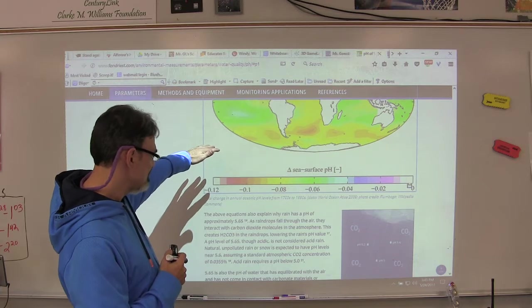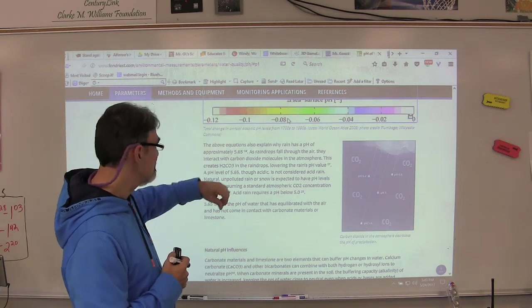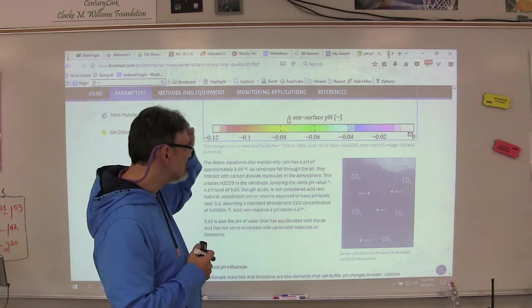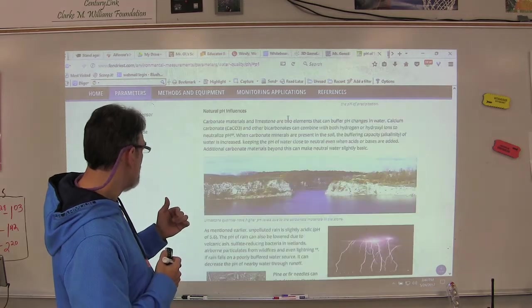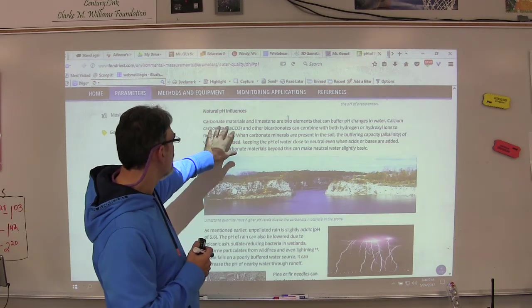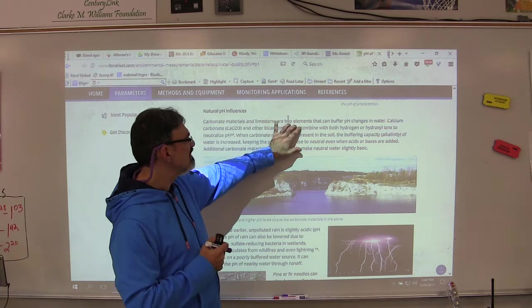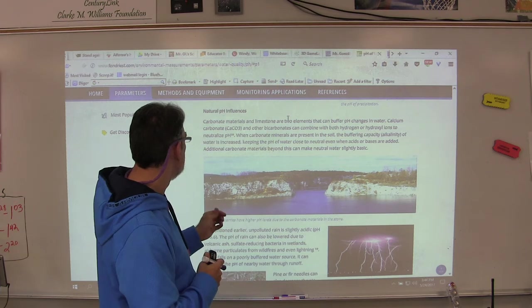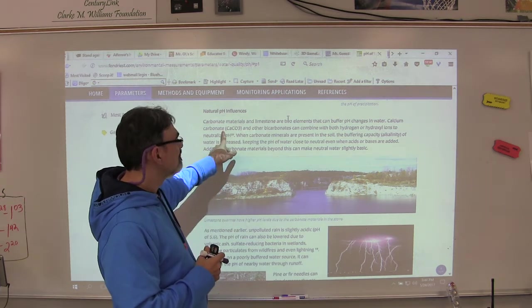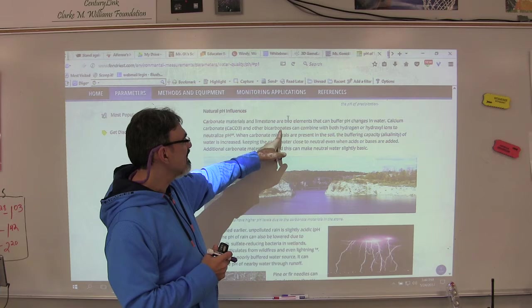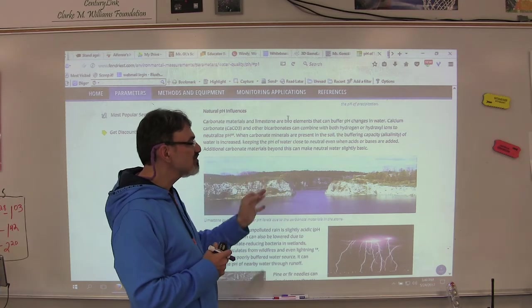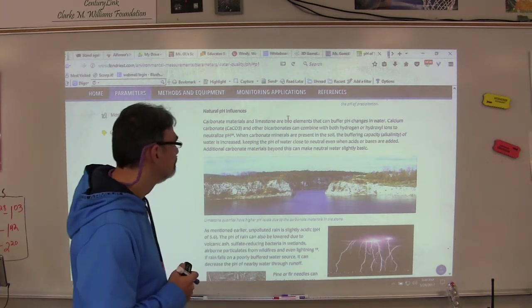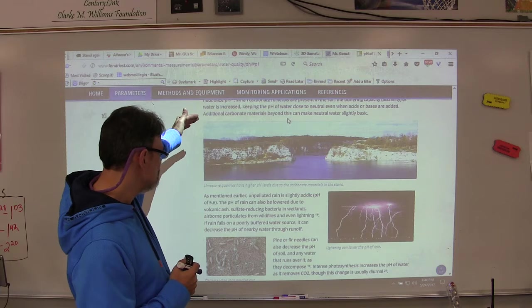This has a nice picture for you so you can see the rising acidity. This is total changes in annual oceanic pH from 1700 to the 1990s. Carbonate materials and limestone are two elements that can buffer pH changes, so they keep it from changing too much. Calcium carbonate and other bicarbonate can combine with both hydrogen or hydroxyl ions to neutralize pH, which is good. That's a good one to read.